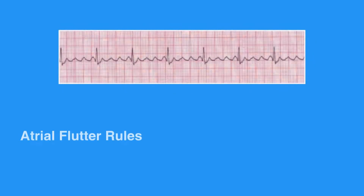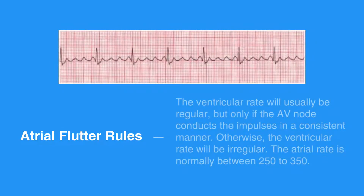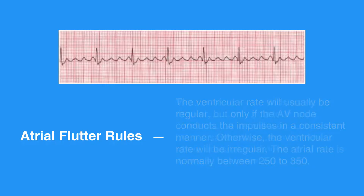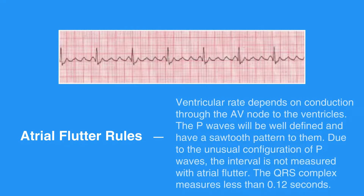The atrial flutter rules include the atrial rate to be regular. The ventricular rate will usually be regular, but only if the AV node conducts the impulses in a consistent manner. Otherwise, the ventricular rate will be irregular. The atrial rate is normally between 250 to 350. Ventricular rate depends on conduction through the AV node to the ventricles.